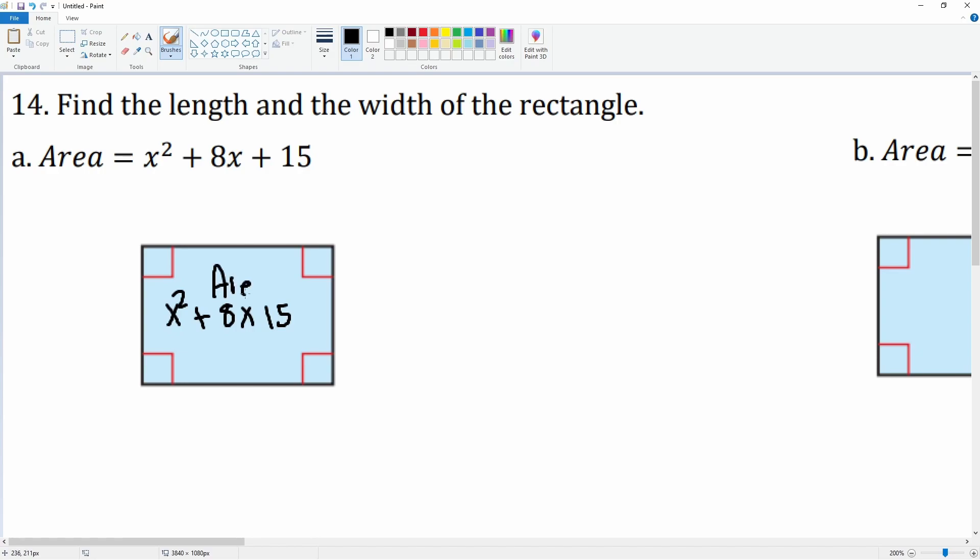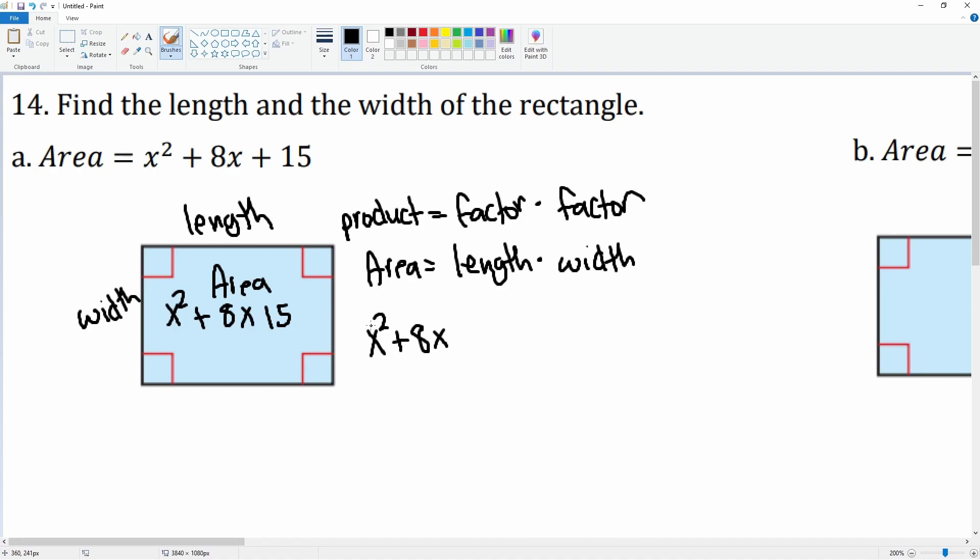The area is defined by the length and the width, so the formula is Area = length × width. This means that the area is a product, and the product equals factor times factor. We realize that the area x² + 8x + 15 is going to equal something times something.